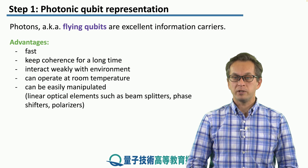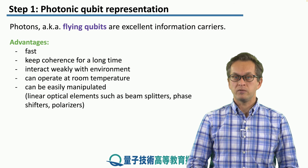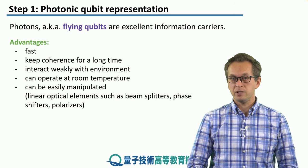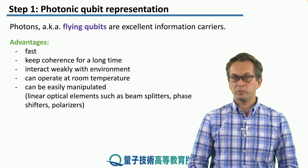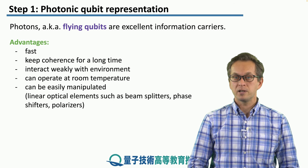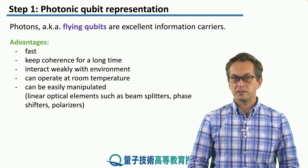Photons can also be manipulated with very simple means using linear optical elements, such as beam splitters, phase shifters, and polarizers.